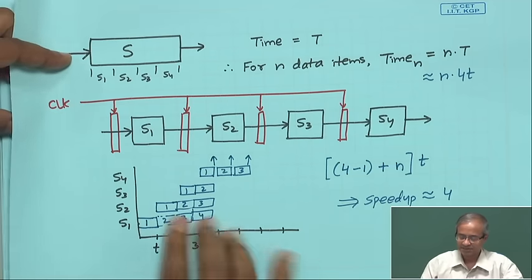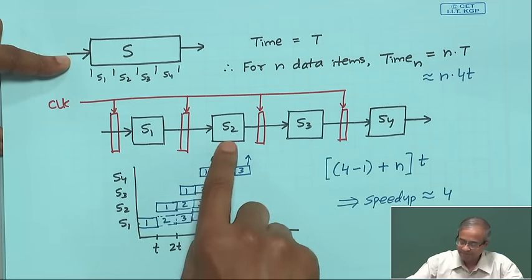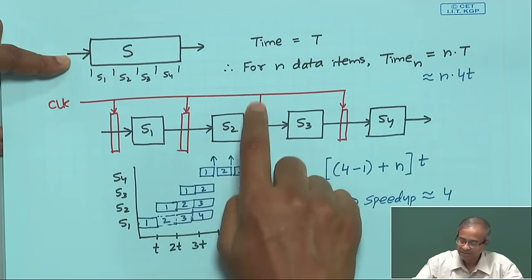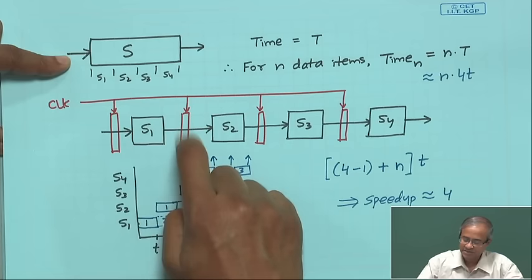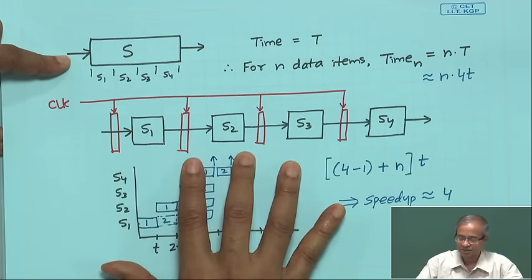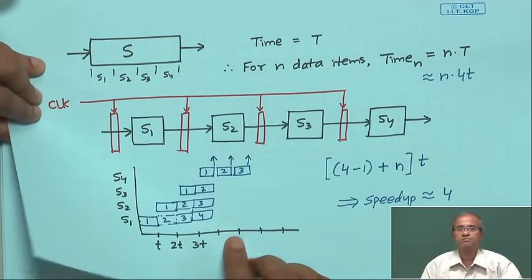Almost all systems today have an internal pipeline structure because of efficiency considerations and the increase in throughput. The basic structure has combinational circuit blocks — S1, S2, S3, S4 — with registers or storage elements in between. At the lowest level, there are two flip-flops with a small combinational circuit in between. If you can analyze that small circuit, you can also analyze a pipeline architecture, which has a very similar structure.